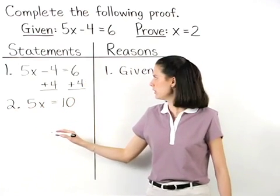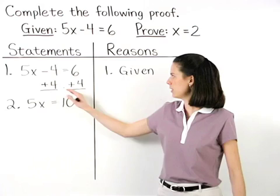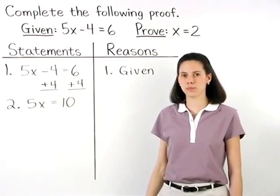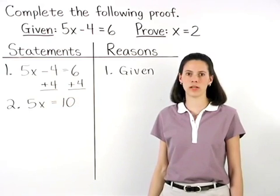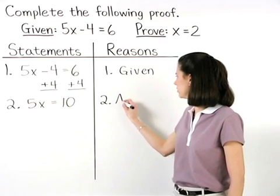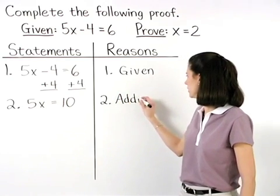And remember, the reason that we can add the same quantity to both sides of an equation is based on the addition property of equality. So reason 2 is the addition property of equality.